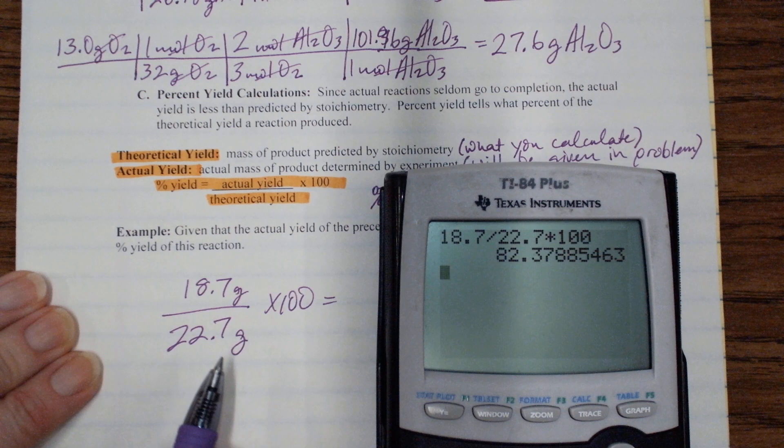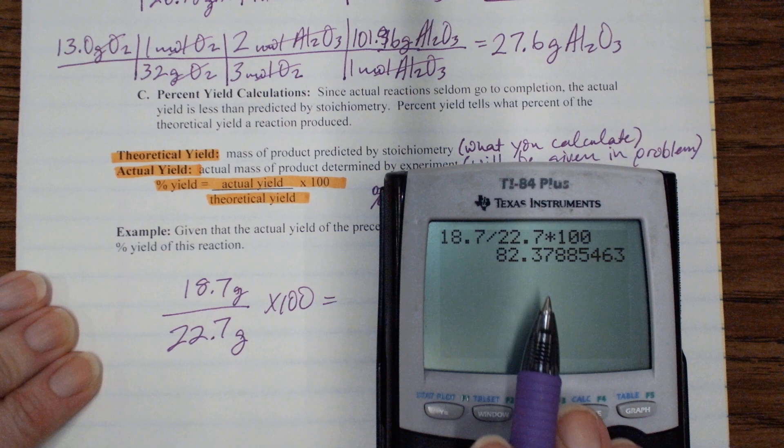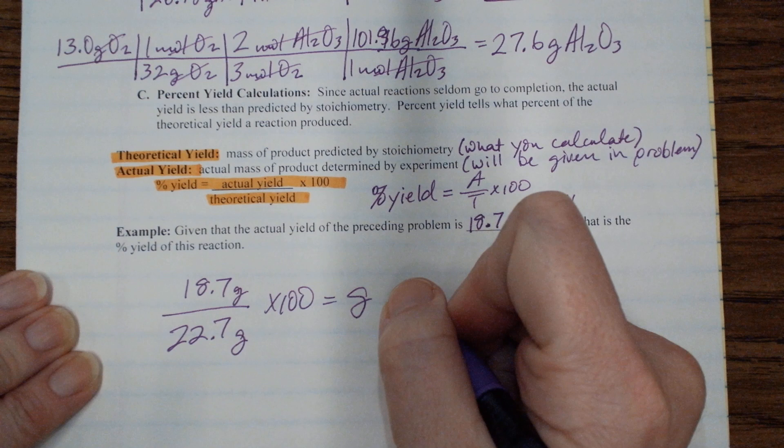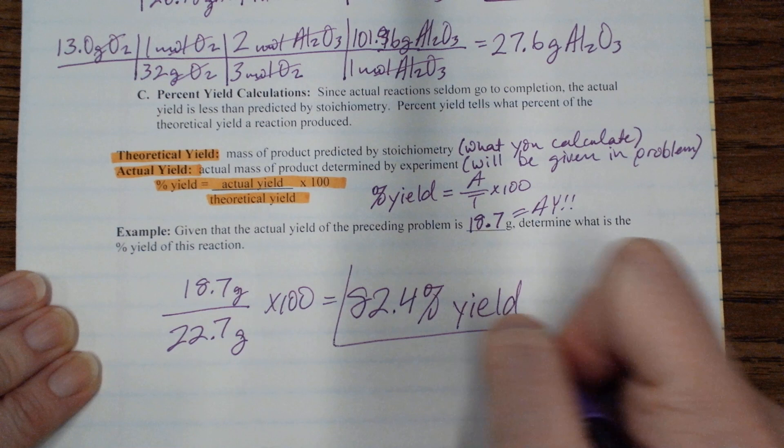Sig figs. So we're dividing. The 100 is part of the formula, so you don't use that for sig figs. But the 18.7, that's 3. 22.7, that's 3. So your answer needs to have three sig figs. This is 82.4 percent yield.